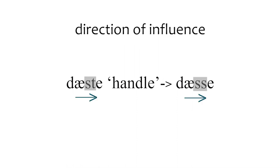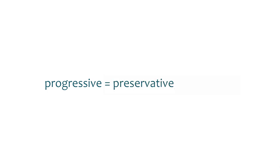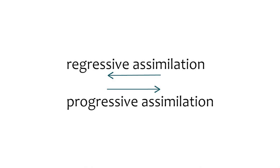So 'daste' meaning 'handle' becomes 'dasse', where 't' becomes 's'. You should know that other books may use different terms instead of 'progressive' — some use 'preservative' because a feature is preserved as you move through the following sound, and some use 'lagging' or 'lag assimilation' because you lag the feature on. They all mean the same thing.